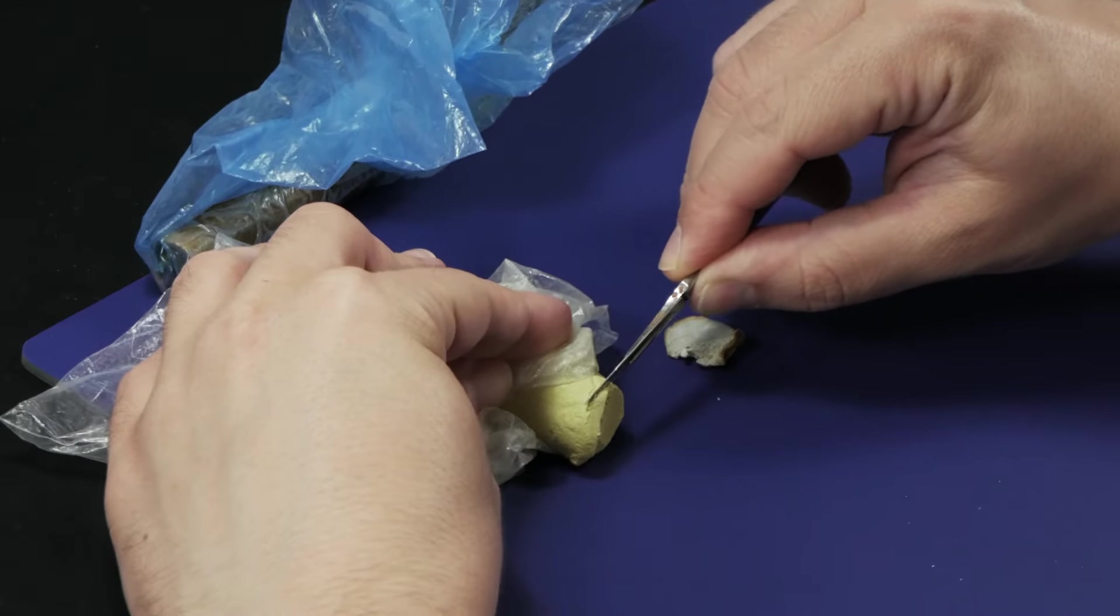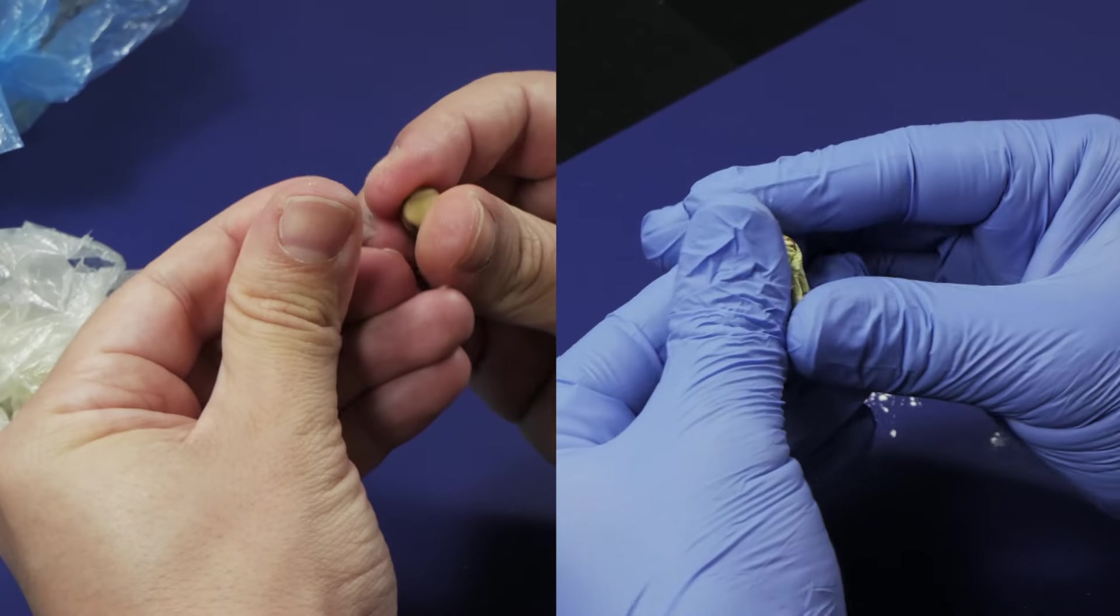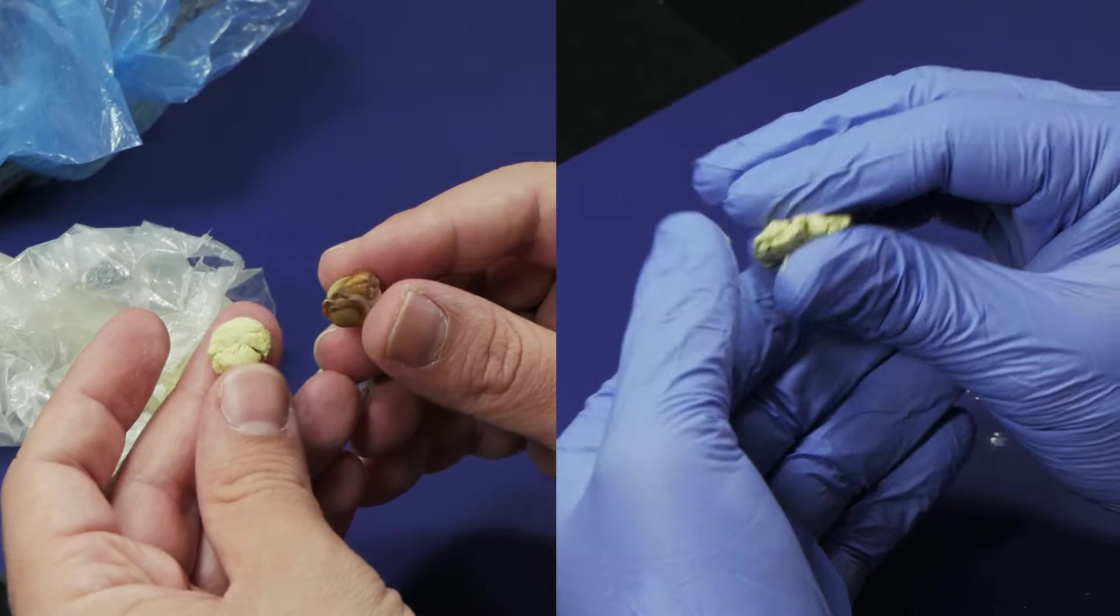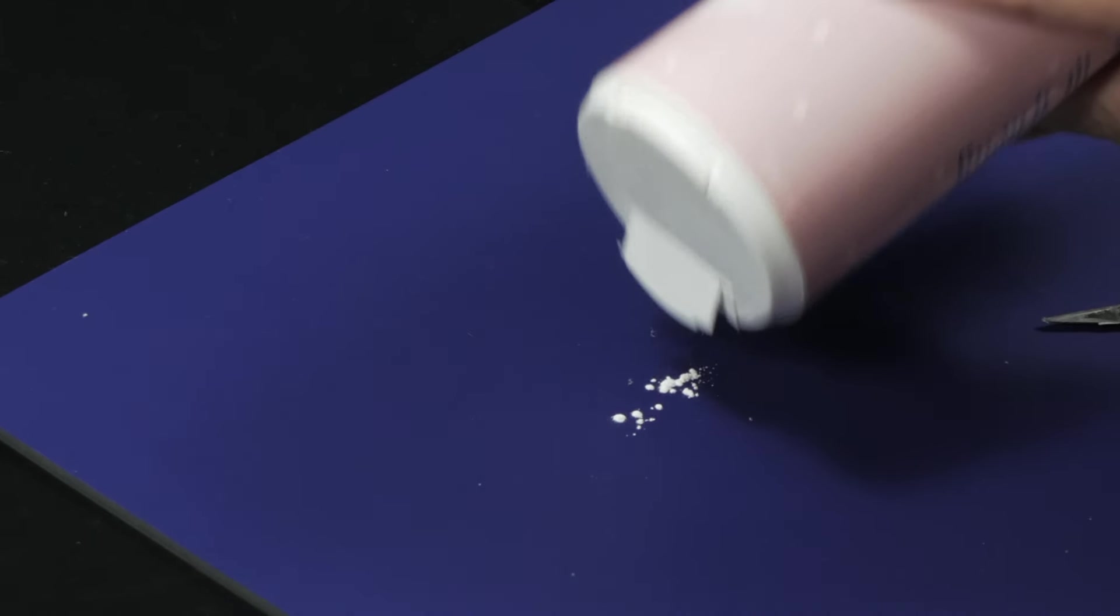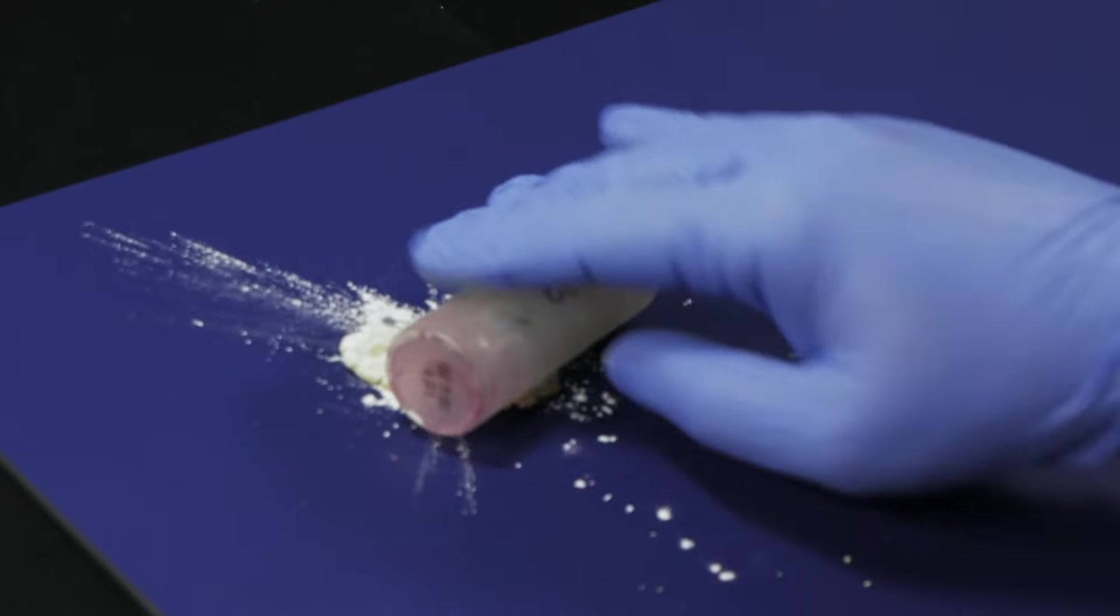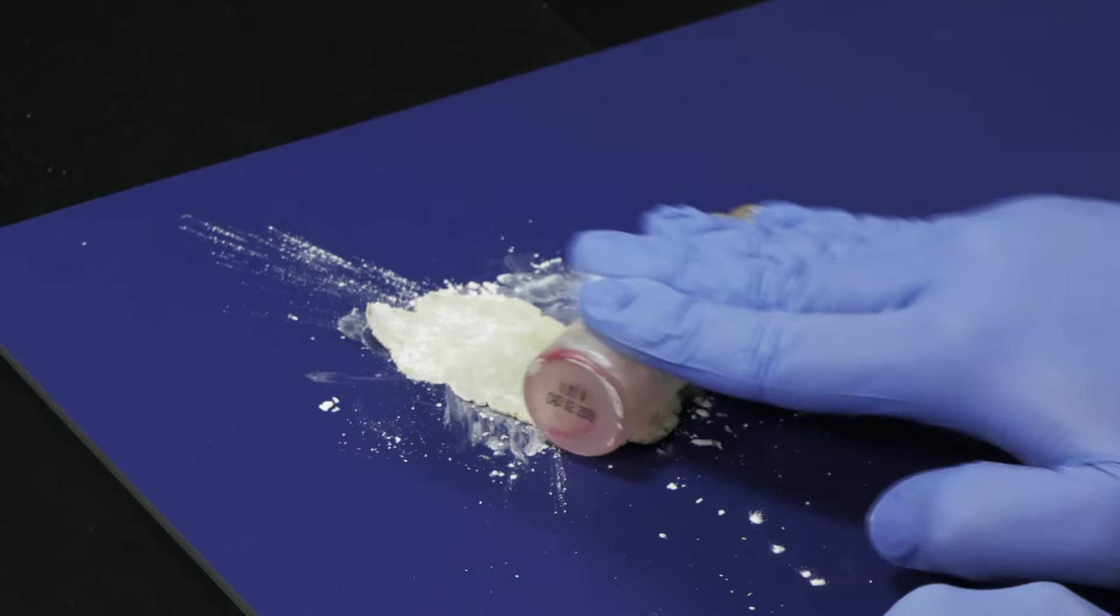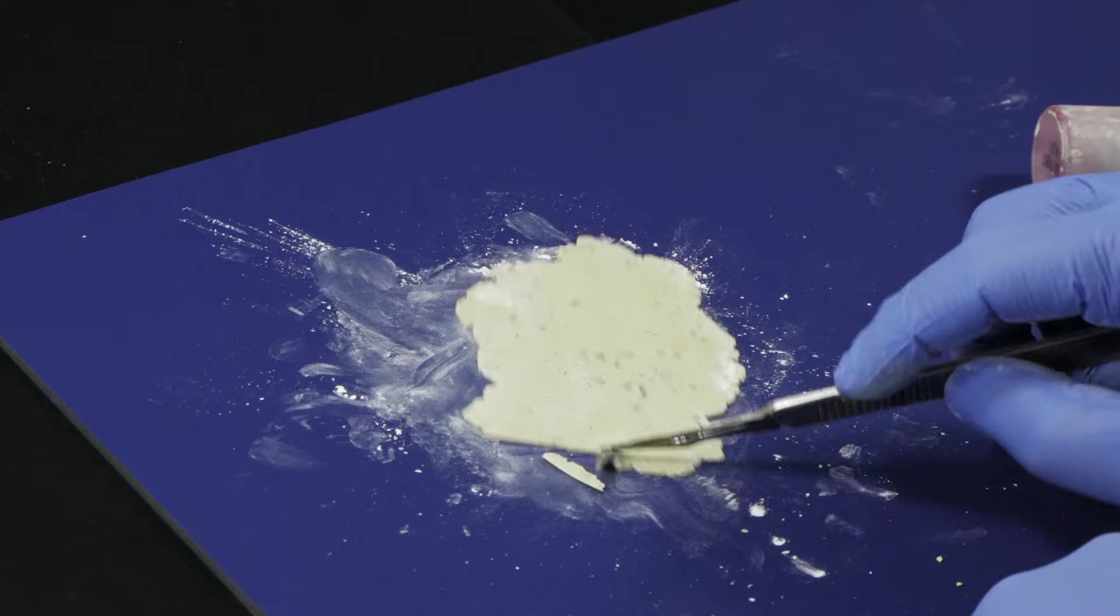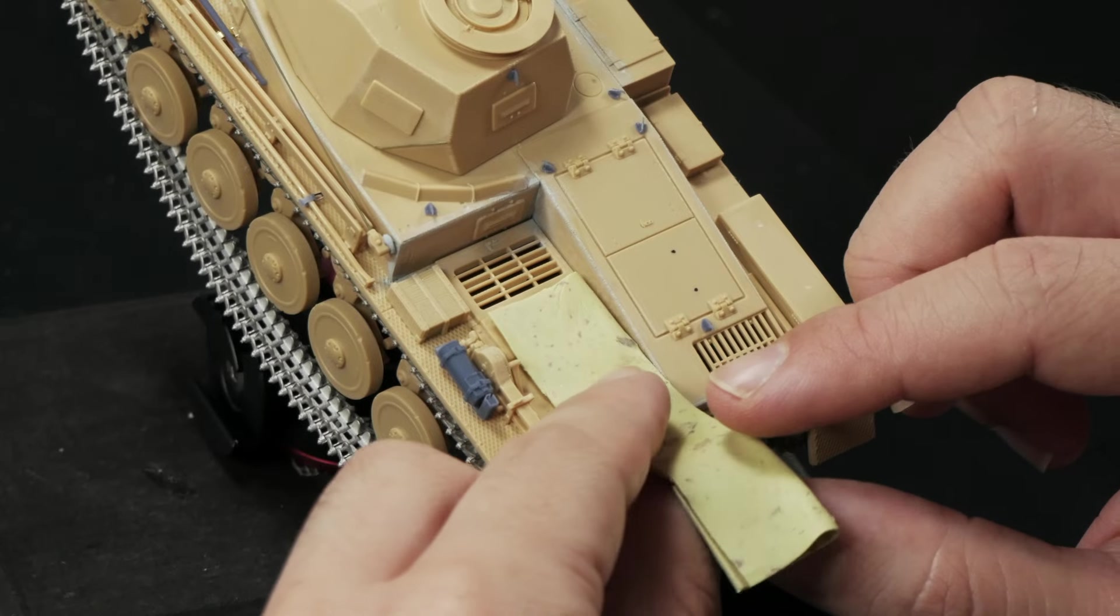So let's take some Milliput Putty. When using two components epoxy putties, it's very important to use equal amounts of each material. When I cut some slices of putty, I pull up each material separately. Later, mix them together until the resulting putty has a homogeneous appearance. Using some baby powder for modeling purposes, I flatten the putty. Now with a hobby blade, I make some cuts searching for a rectangular shape. I want to represent some folded canvas or blankets.